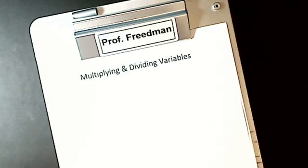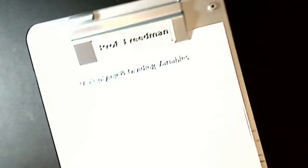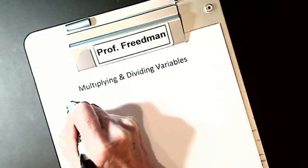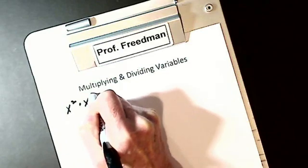We are now going to multiply and divide with variables, and I think you'll find this easy. Let's say I have x squared times x cubed.